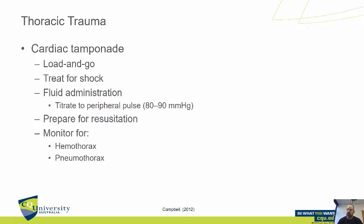Cardiac tamponade requires surgical intervention — load and go, and treat for shock. If giving fluid, titrate to 80 to 90 mmHg systolic. You don't want to overload these patients with fluid for the same reasons as any trauma situation. Prepare for resuscitation as these patients crash quickly — have your ECG on, pads in place, and drugs drawn up. Also, if the mechanism was severe enough to cause cardiac tamponade, keep an eye out for signs of hemothorax or pneumothorax as well.